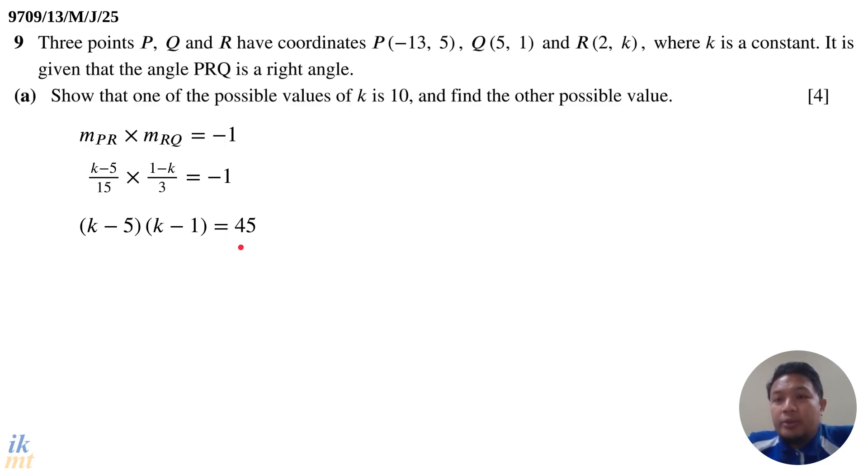That's already enough for you to be able to show that one of the possible values of k is 10. Just substitute k equals 10. This is super easy. You don't even have to calculate using your calculator. You can see that 10 minus 5 is 5 and 10 minus 1 is 9, so 5 times 9 is indeed 45. The equation is true when k equals 10, so 10 is one of the possible values of k. We have shown that.